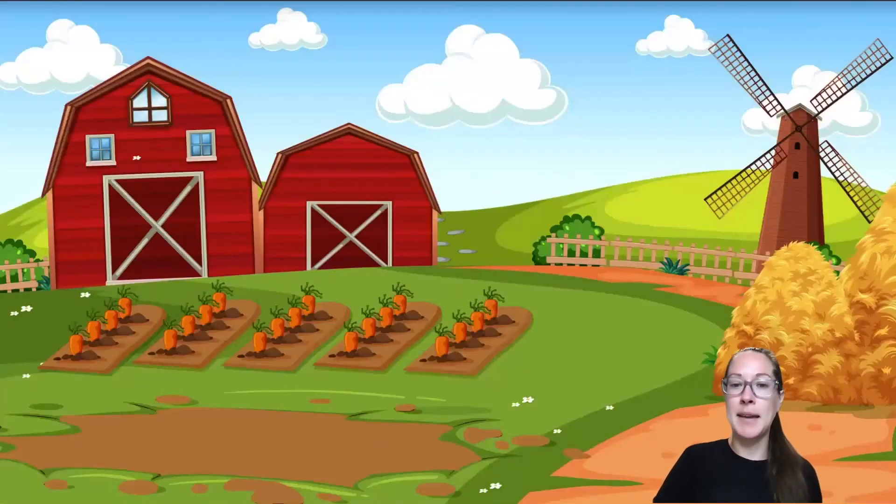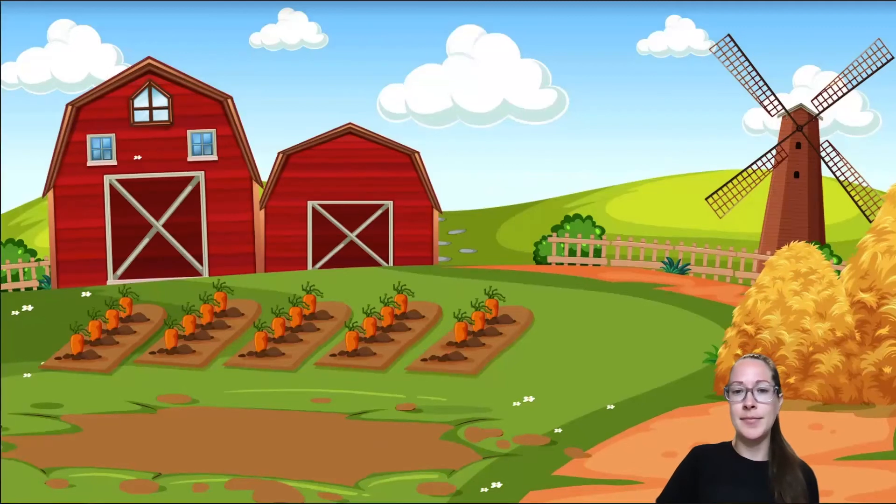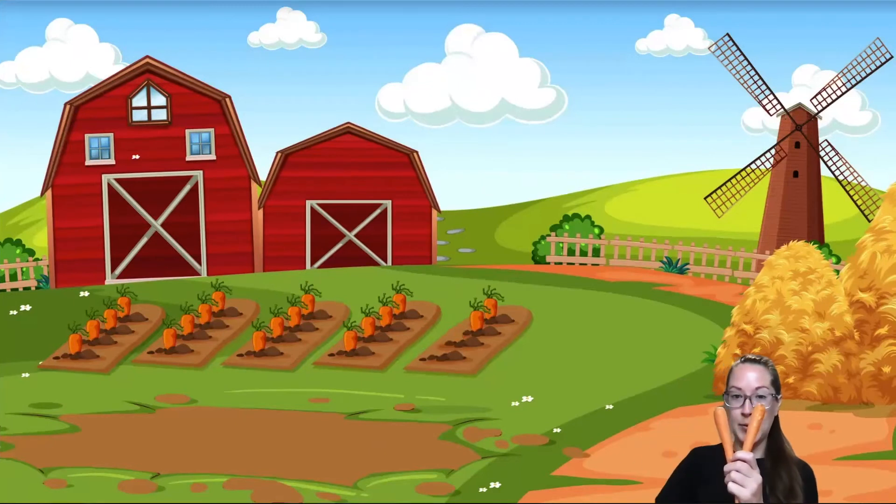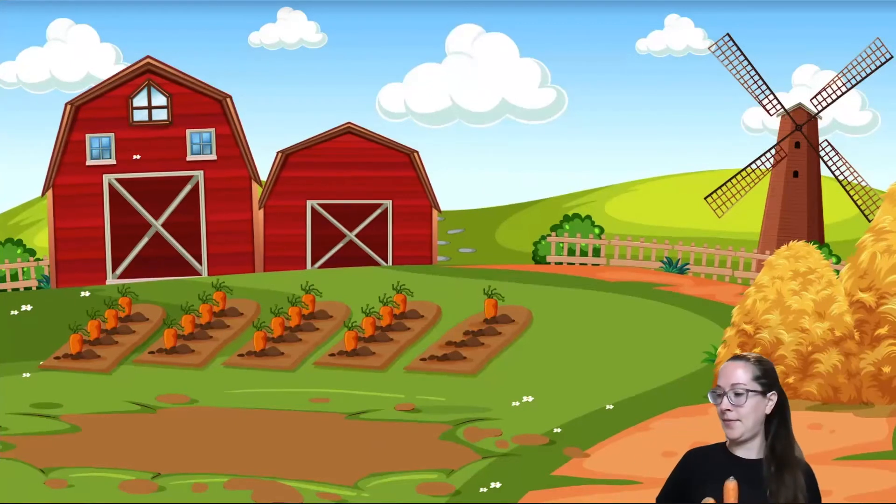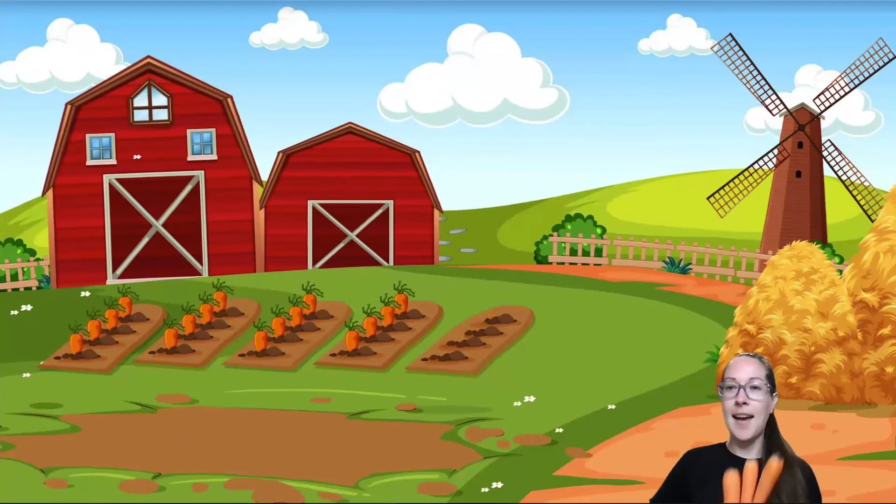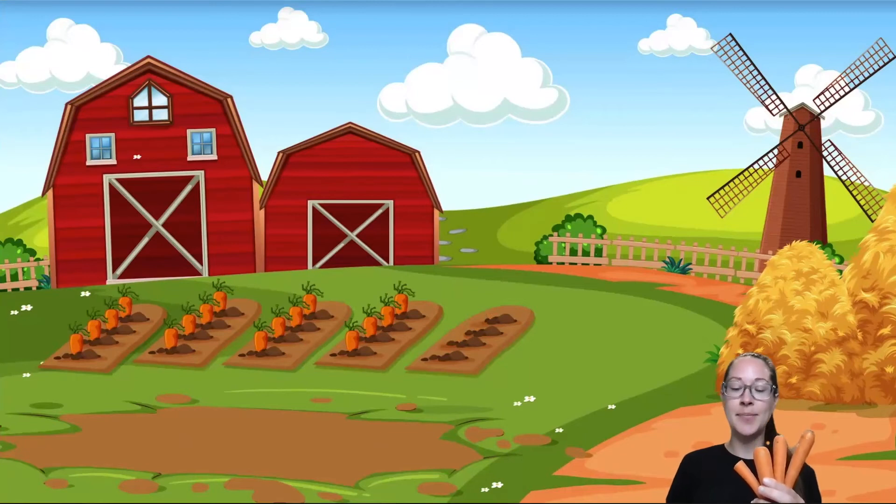Next, I see some carrots. Carrots are orange and they're really good for us when we eat them. They make our body super strong. Maybe we should pick some carrots so we can eat them later. One, two, three, and four. We picked four carrots. Yummy, yummy.